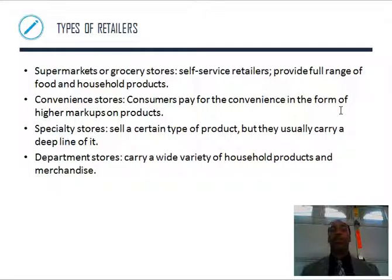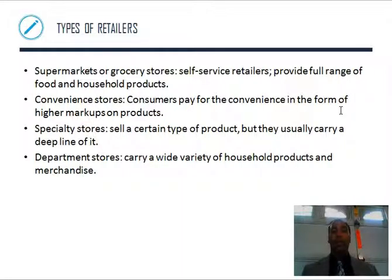Different types of retailers. Supermarkets and grocery stores are self-service retailers providing a full range of food and household products. Convenience stores — consumers pay for the convenience in the form of higher markups on products because it's right there, like a 7-Eleven on the corner. Specialty stores sell a certain type of product but usually carry a deep line of it — a lot of different varieties, shapes, sizes, and colors of the same specialty. Department stores carry a wide variety of household products and merchandise.